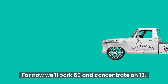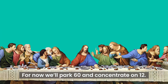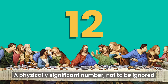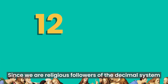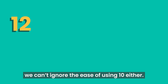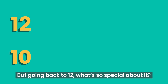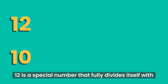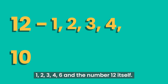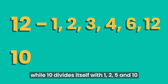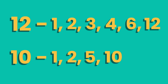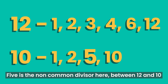Let's dig deep. For now, we'll park 60 and concentrate on 12 — a physically significant number not to be ignored when it comes to time. Since we are religious followers of the decimal system, we can't ignore the ease of using 10 either. But going back to 12: what's so special about it? 12 is a special number that fully divides itself with 1, 2, 3, 4, 6, and 12 itself, while 10 divides itself with only 1, 2, 5, and 10.